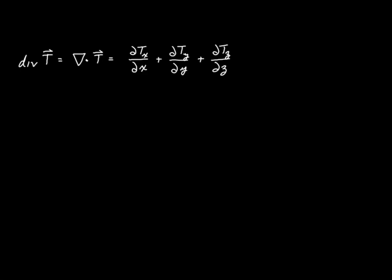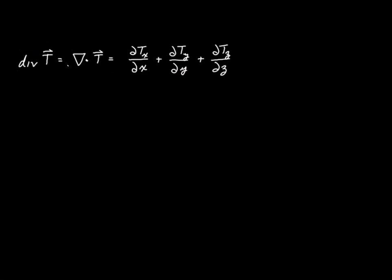Here we have an expression for the divergence as it relates to Cartesian coordinates. The divergence is symbolized either this way or this way depending on what literature you're looking at. The divergence is a scalar function, a scalar quantity that's a function of the point within our space that measures the increase or decrease of whatever quantity is being represented by our vector field.